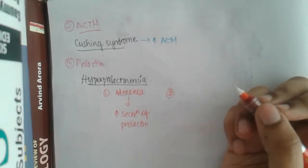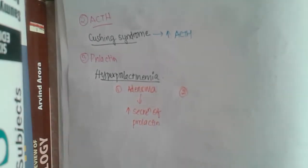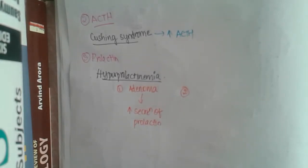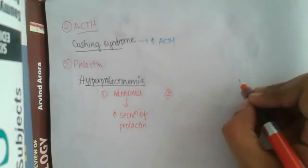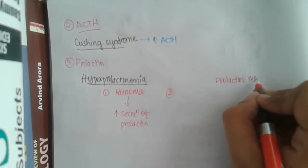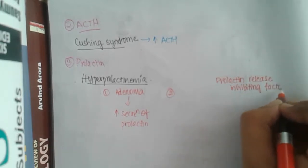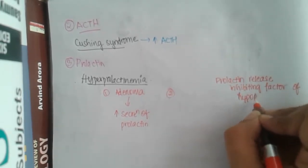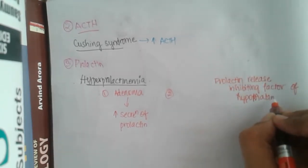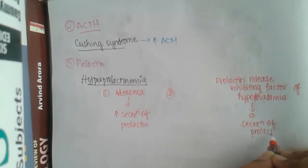Normally, prolactin production is inhibited when it is not needed. This inhibition is carried out by the prolactin release inhibiting factor of the hypothalamus. This prolactin release inhibiting factor is essentially dopamine, which inhibits the secretion of prolactin.